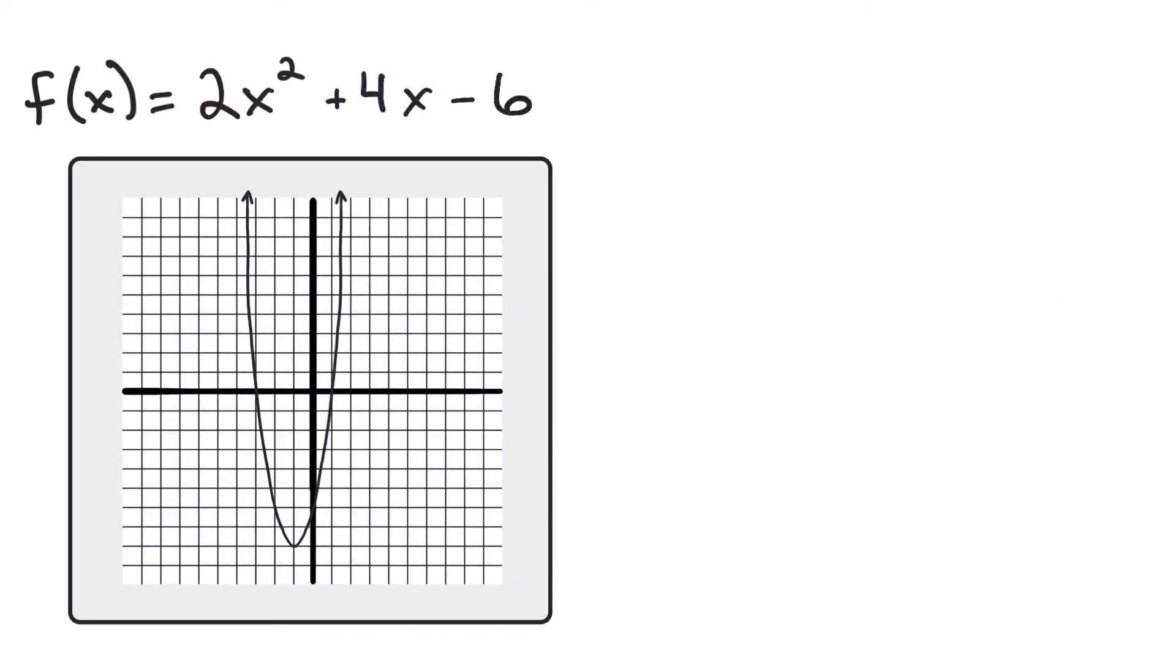So here's an example. I have the function f(x) equals 2x squared plus 4x minus 6. That's a quadratic because the highest power of x is x to the second power. It's going to make a parabola. I've already graphed it for you, but on your problems, they will not be graphed ahead of time. You're going to find these characteristics, these traits, and then graph the parabola based on them.